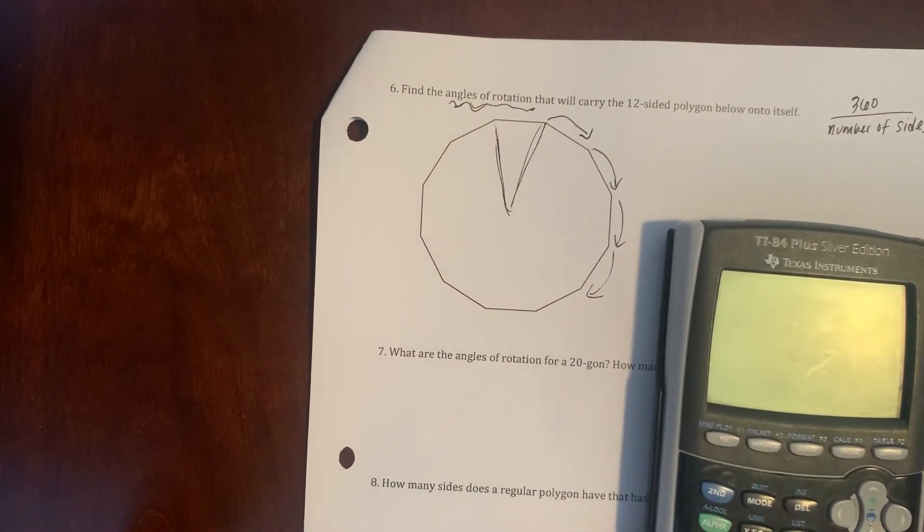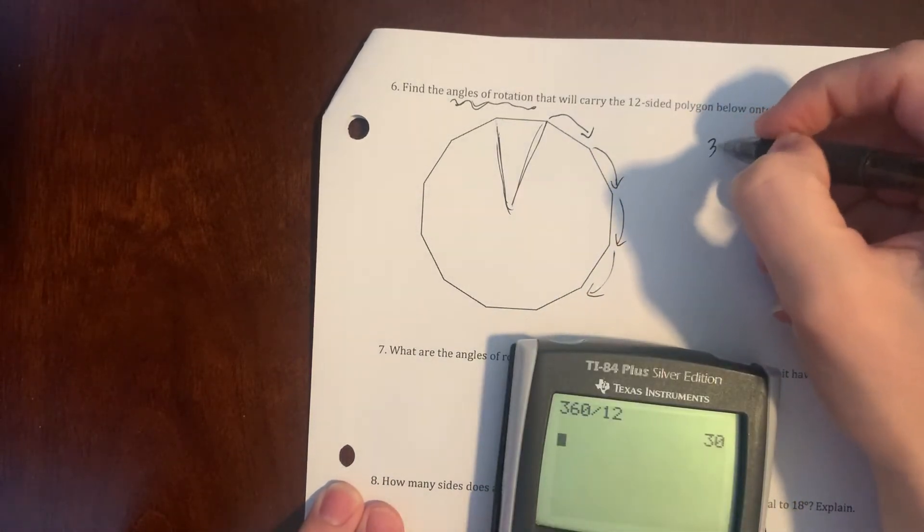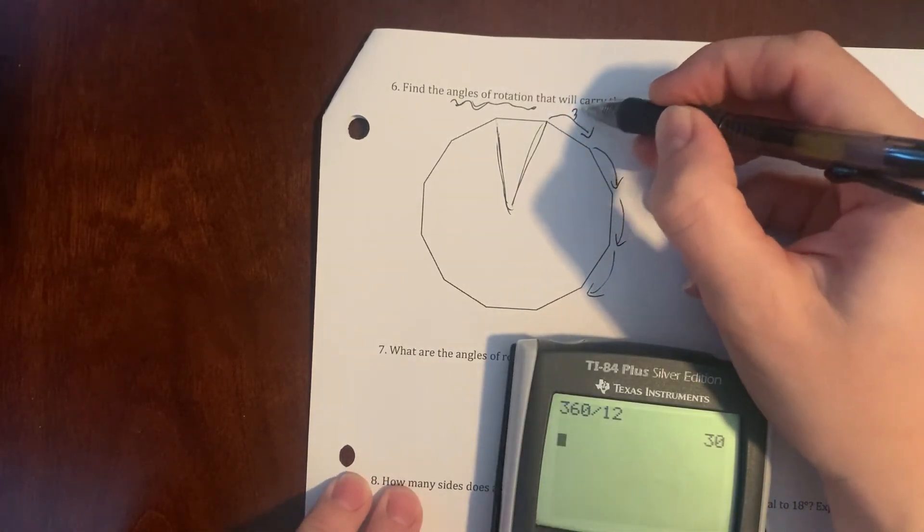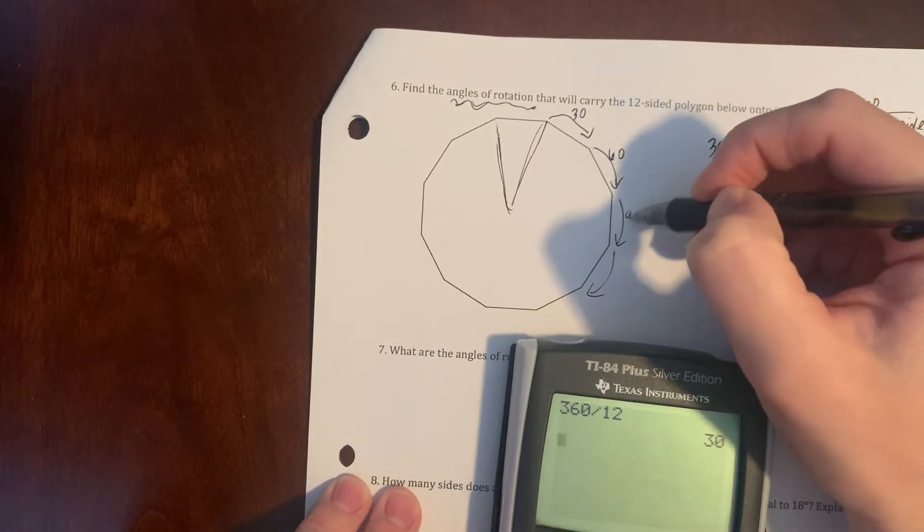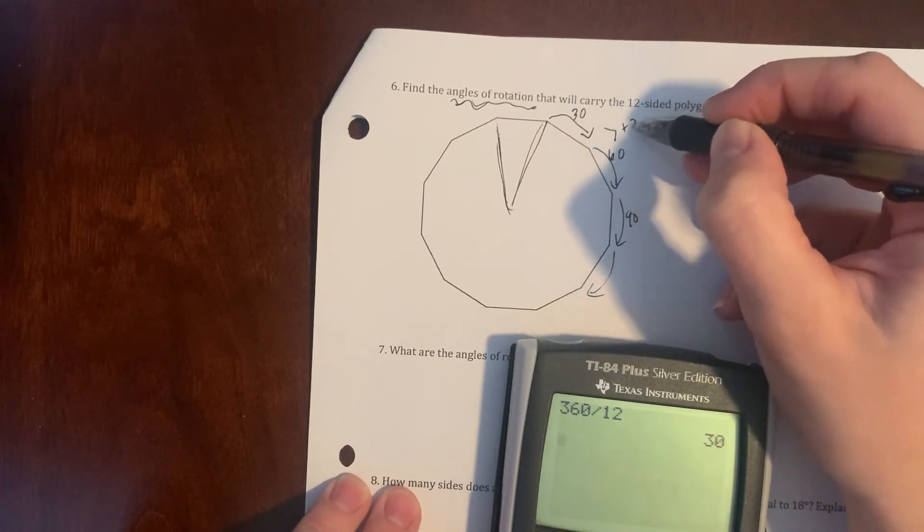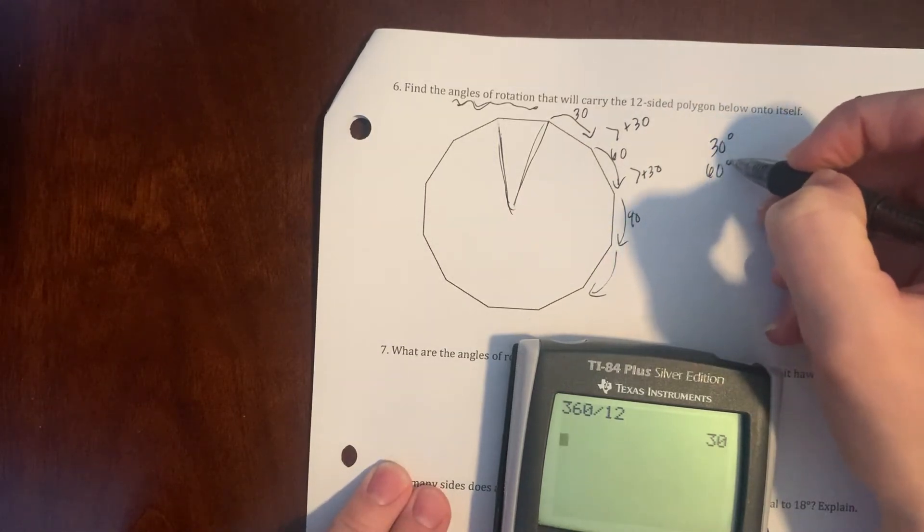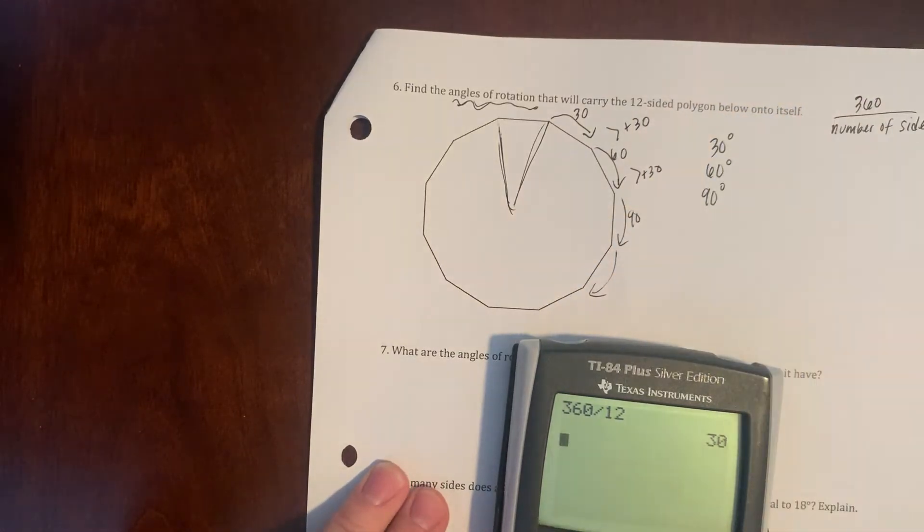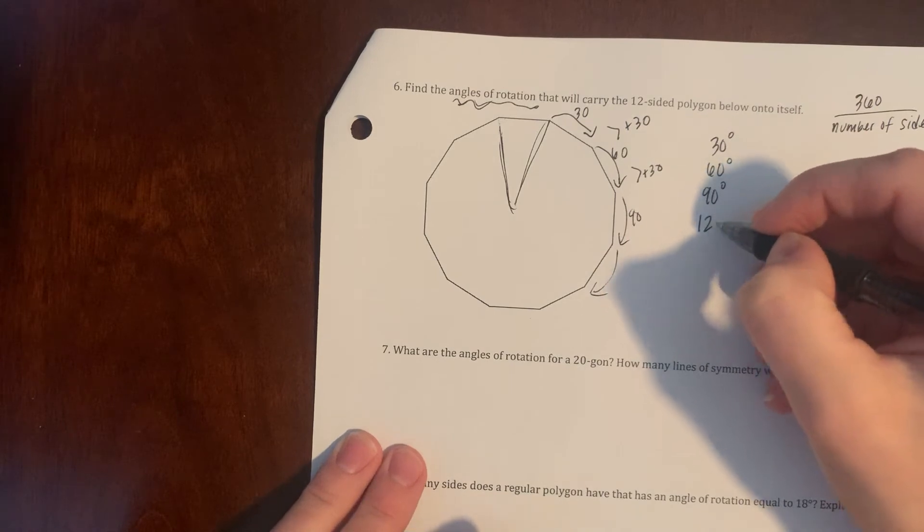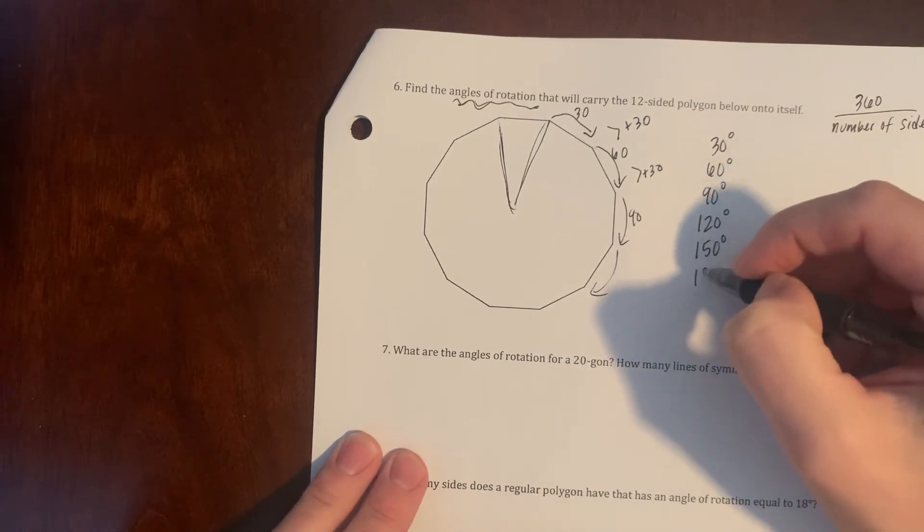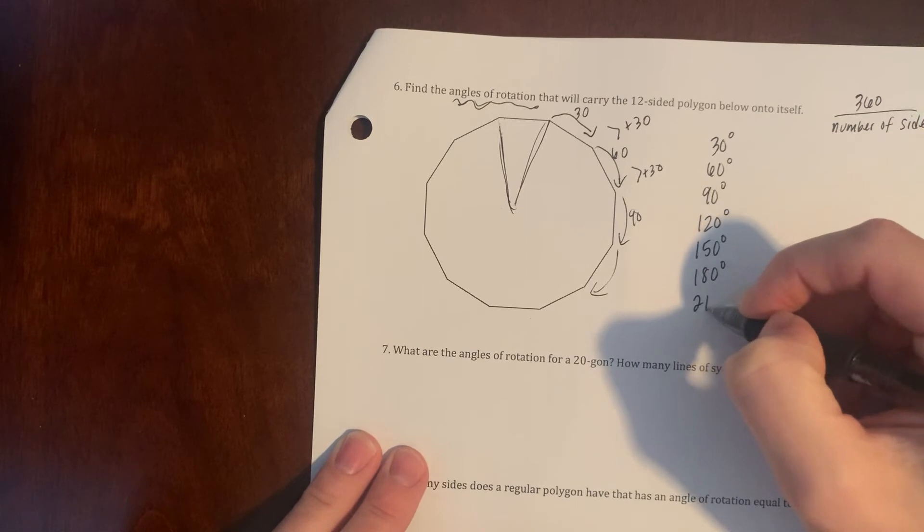So I take 360 divided by 12 is 30. So I do 30 and 60 and 90, and I would just keep adding 30 every time, and I want to list all of those out. So I'm just adding 30, adding 30.